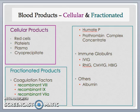For the immune globulins, there is intravenous immunoglobulin, IVIG, and other more specific types of immune globulin, including RHD immunoglobulin known as RhIG, CMV immunoglobulin, and hepatitis B immunoglobulin, etc. The last category of fractionated blood products would include plasma proteins such as albumin.